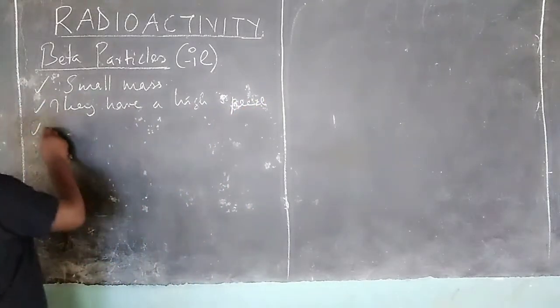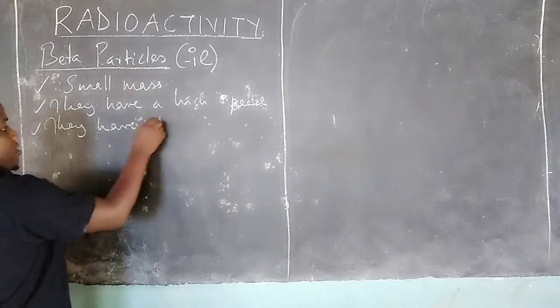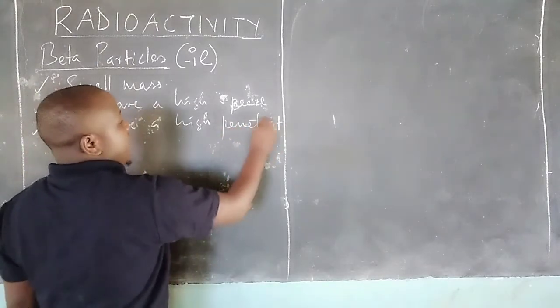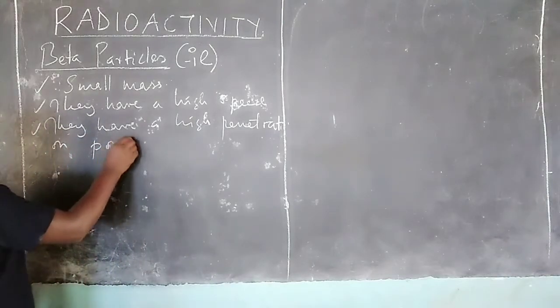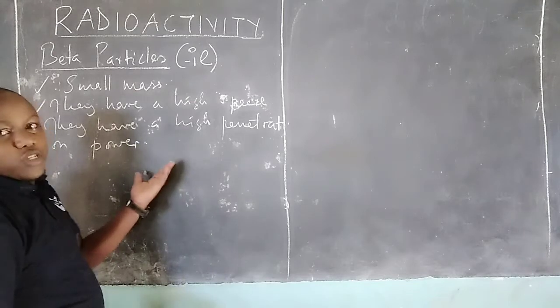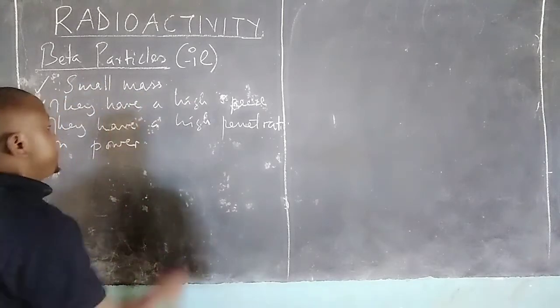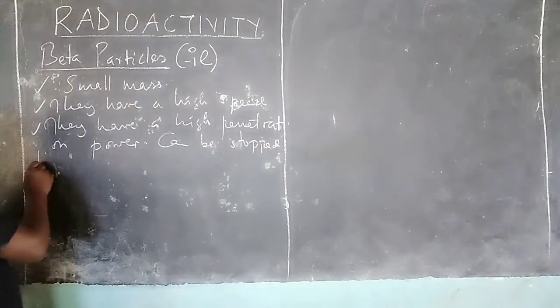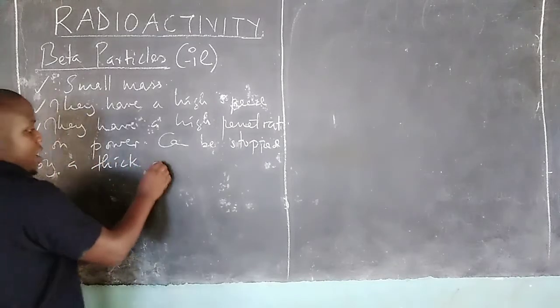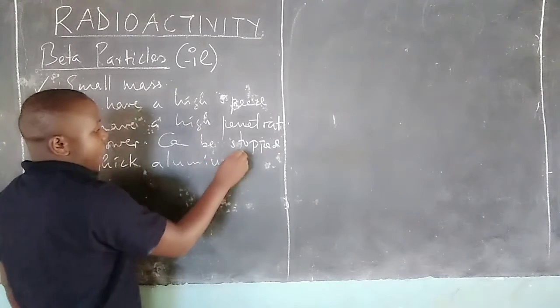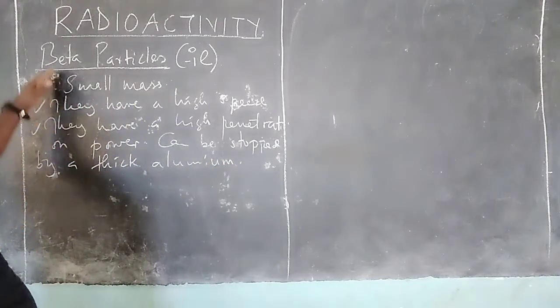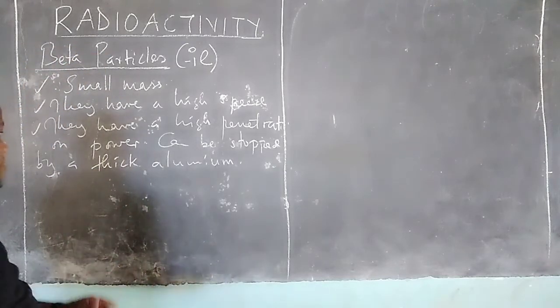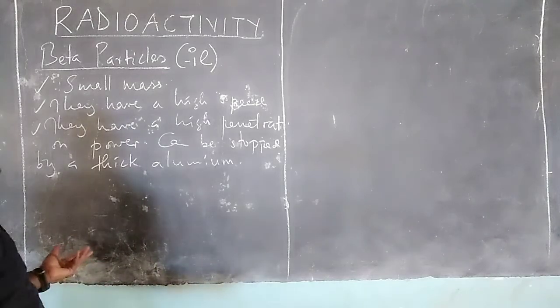Due to the high speed, they have a high penetration power, relatively higher compared to alpha particles. The beta particles can be stopped by a thick aluminum. Aluminum sheets can stop beta particles, unlike alpha particles which have very low penetration power and can even be stopped by a sheet of paper.